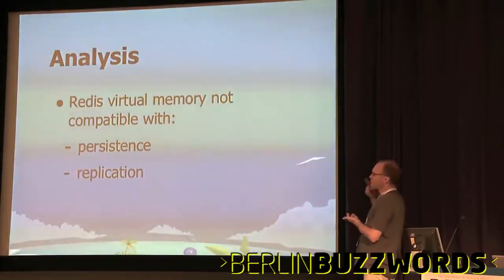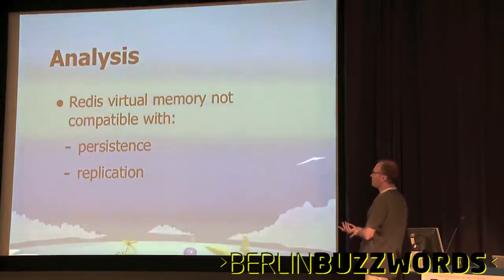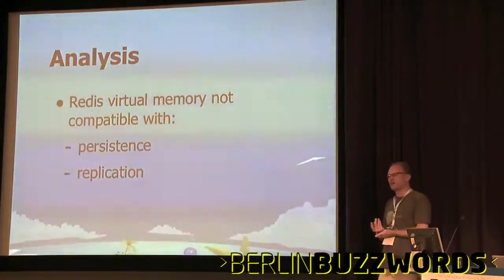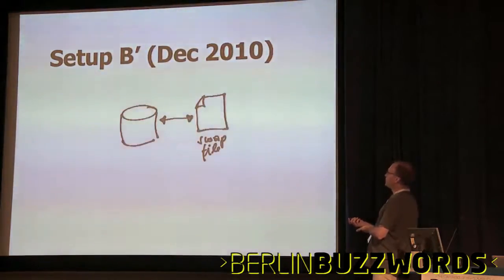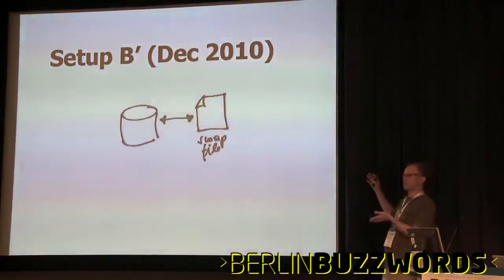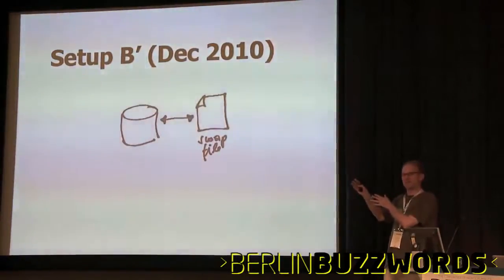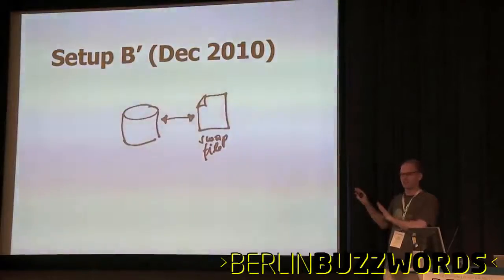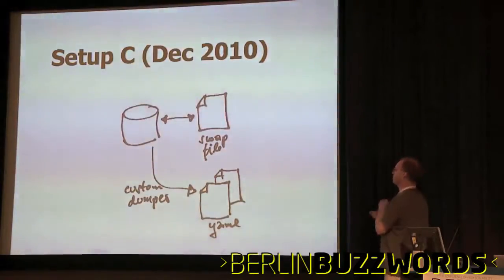It turns out this is actually not a valid setup with Redis virtual memory — the VM system works fine on its own, but it doesn't work with replication and persistence turned on simultaneously. We had various issues: Redis was getting unstable, crashing, consuming tons of memory, and running out of memory very fast. We just couldn't get it to work. So we switched off replication and switched off persistence, leaving us with a pure in-memory database — still working, but if the server went down, everything would be gone.